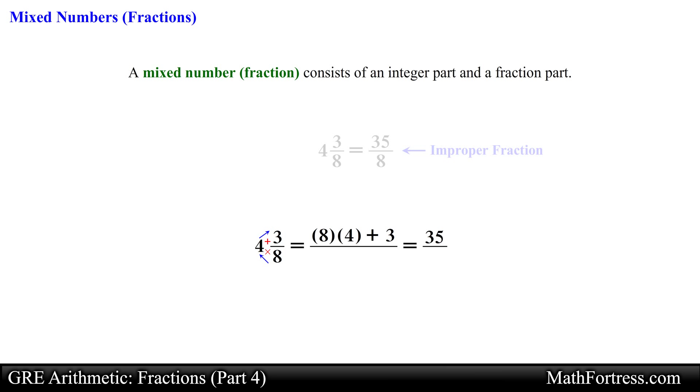This will be the numerator of our improper fraction, making sure we keep the same denominator as that of the fraction part of the mixed number. Either method will work. In the end the mixed number 4 and 3 eighths is equivalent to 35 over 8.